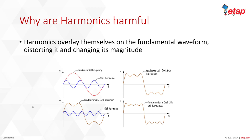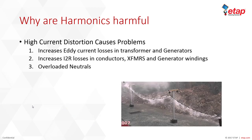Let's talk about why harmonics are harmful. The harmonics overlay themselves on the fundamental waveform, distorting it and changing its magnitude. As shown in the illustration, on the left you have the fundamental frequency sinusoidal wave, and you also have the third harmonic. When you combine the two, on the right side you can see the superimposed or overlaid output.